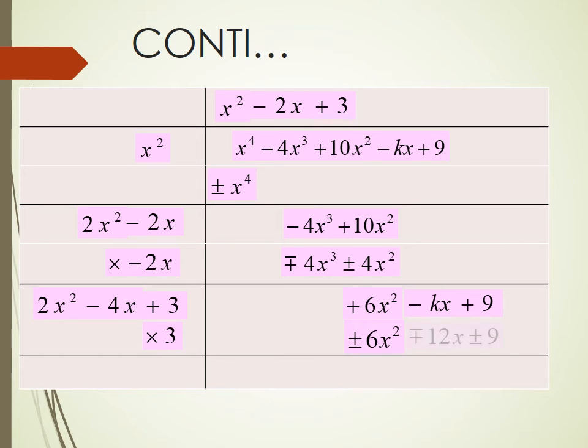After multiplying we get plus 6x square plus 12x plus 9. So after canceling the similar terms, we get minus kx plus 12x. So minus kx plus 12x is our remainder.